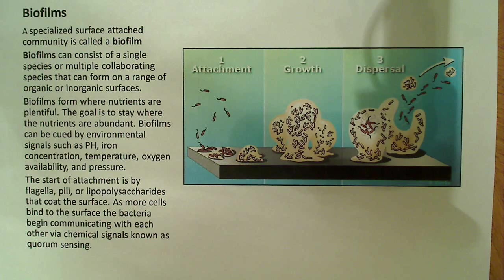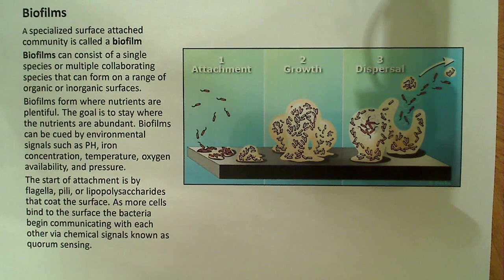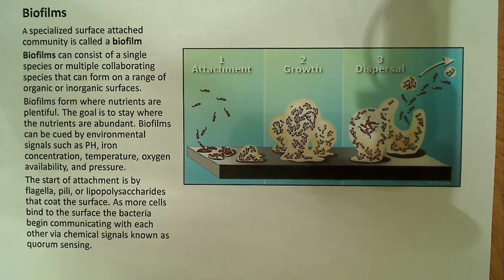Those are specialized surface-attached communities of microorganisms. And those microorganisms can be very diverse. It doesn't necessarily have to be one species of bacteria. It doesn't even necessarily have to be just bacteria. You can have yeast, protozoa, etc. — eukaryotic microorganisms, as well as bacteria. So you're dealing with a very, very diverse group.